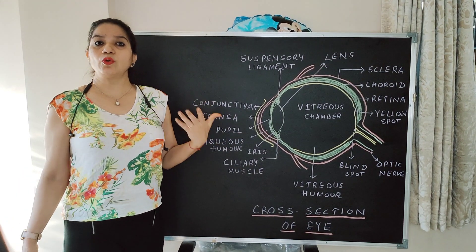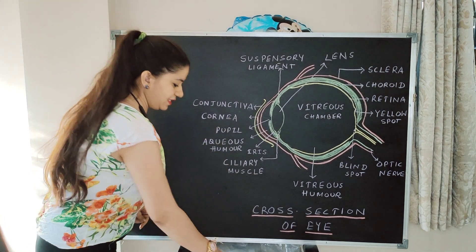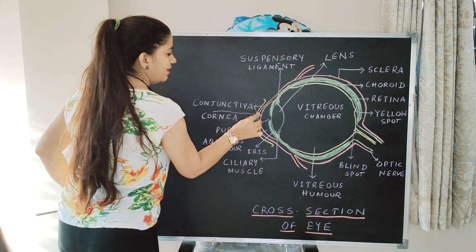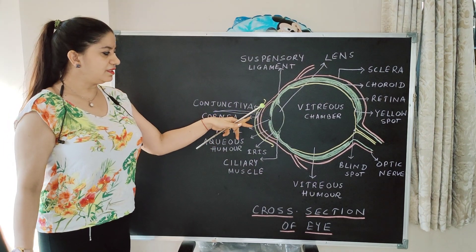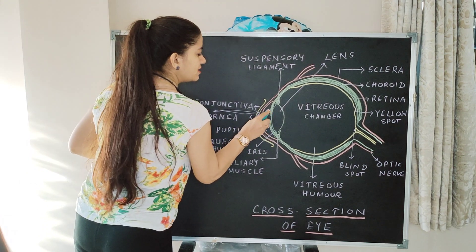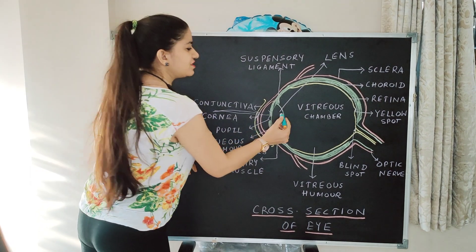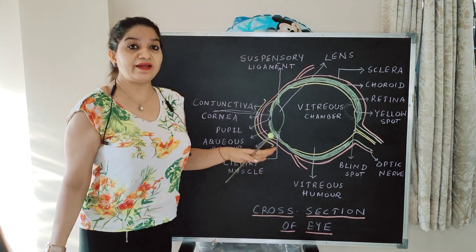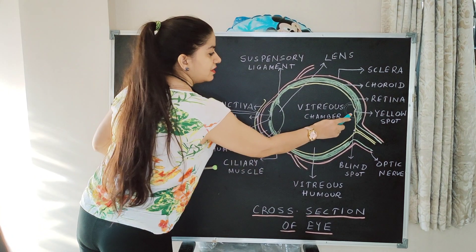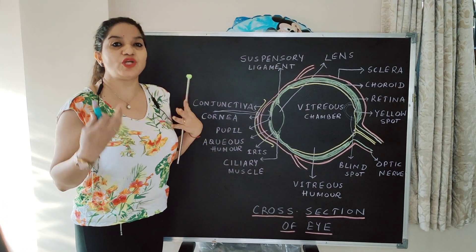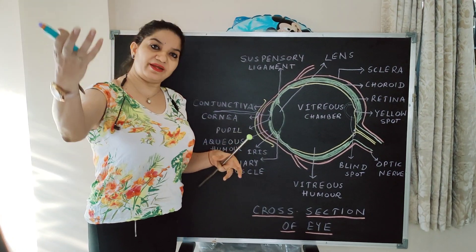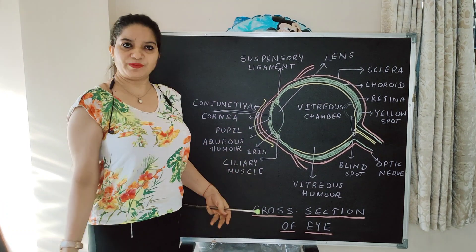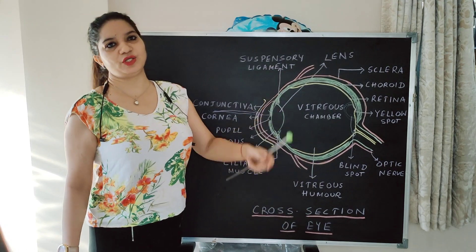Now let us see how the eye enables us to see an object. Light first enters through the cornea. Inside, the cornea reflects the light towards the lens. The lens refracts and focuses the light on the retina — specifically at the yellow spot. The image formed on the retina is real and inverted. The sensory cells cause certain chemical changes, and the optic nerve takes this chemical signal to the brain. The brain interprets it and we are able to see the object upright. I will wind up my lecture here — see you in the next video with the continuation of eye.